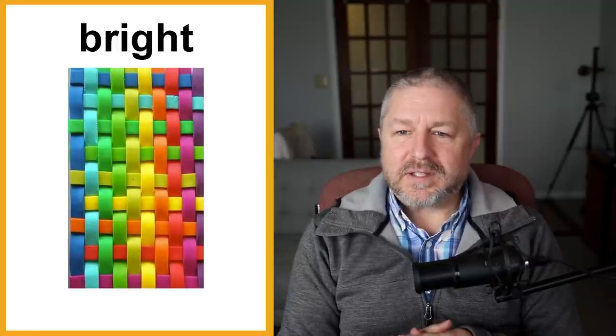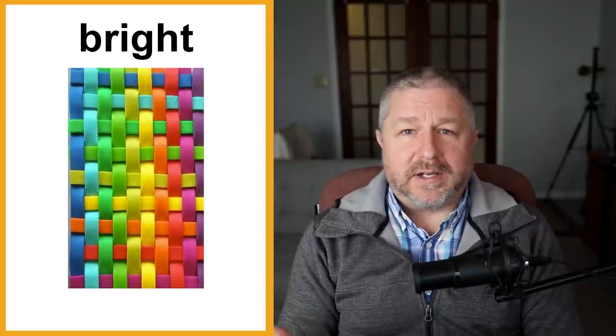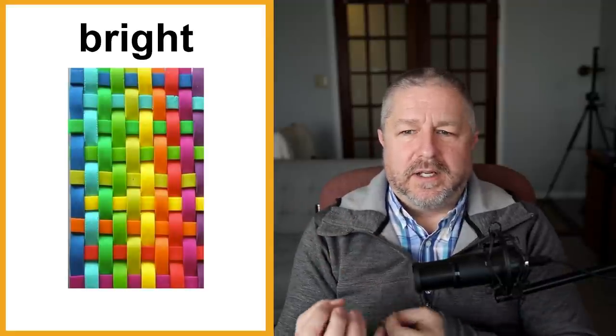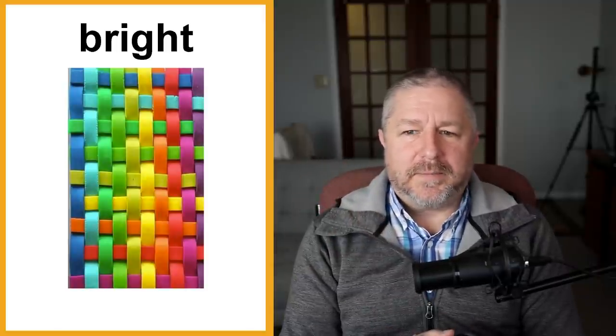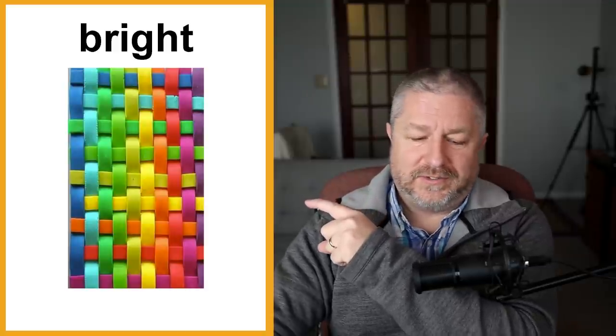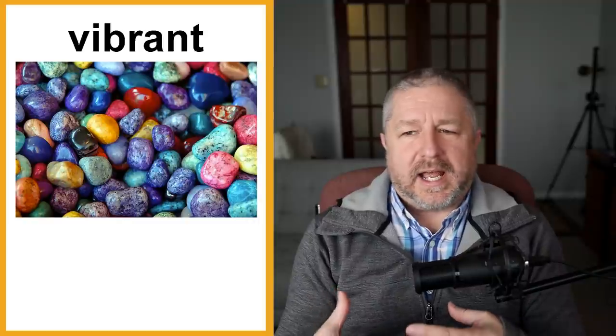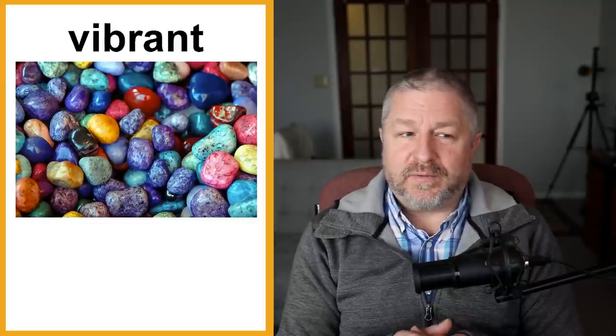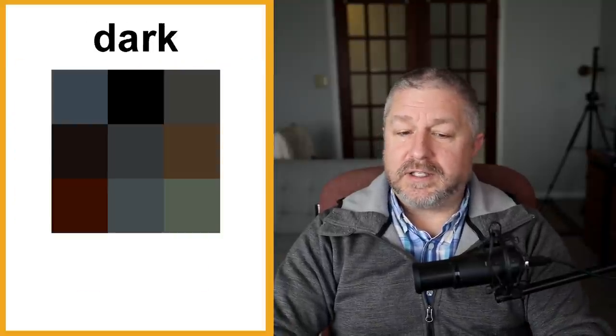We also have bright colors. Some people like to dress in dark colors and some in bright colors — things that are neon, reflective, or where the colors are just very vivid. We also have the word vibrant. When something is vibrant, it has a mix of colors and is very similar to bright — you could almost use these words interchangeably. He always wears very vibrant colors: lots of bright blue, bright yellow, and bright pink.